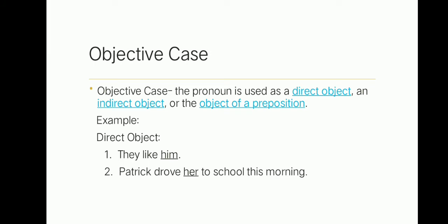Objective case: the pronouns used as a direct object, indirect object, or object of preposition. When we say direct object, it is the receiver of the action. For example, do you like him? Him is the direct object of the verb like, and him is the objective case version of he. Another example: Patrick drove her to school this morning. Her is the direct object of the verb drove, and her is the objective case version of she. Did you understand, class?